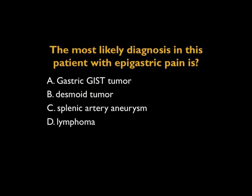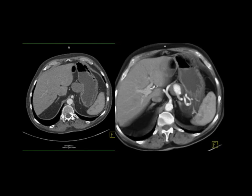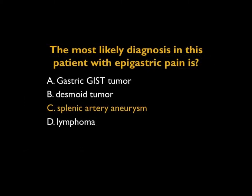This patient has epigastric pain. On the non-contrast scans you see a cystic lesion either arising off or abutting the stomach. With IV contrast it enhances very brightly, and looking carefully it's coming from the splenic artery, making it very easy to call this a splenic artery aneurysm. Lymphoma is homogeneous — not this. Desmoid tumors don't have this low density. It could be a gastric GIST tumor, but those are usually not so cystic. With bright enhancement, you know you're dealing with a splenic artery aneurysm.